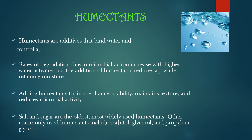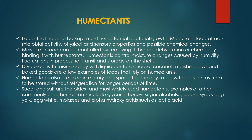Adding humectants to food enhances stability, maintains texture, and reduces microbial activity. Salt and sugar are the oldest and most widely used humectants. Other commonly used humectants are sorbitol, glycerol, and propylene glycol. Food that needs to be kept moist risks potential bacterial growth. Moisture in food affects microbial activity, physical and sensory properties, and possible chemical changes. Moisture in food can be controlled by removing it through dehydration or by chemical binding with humectants.